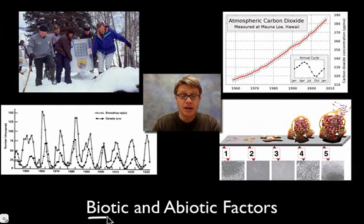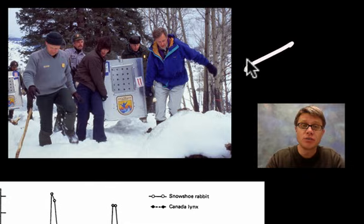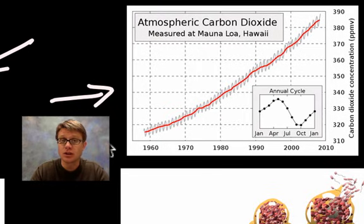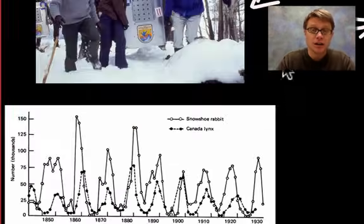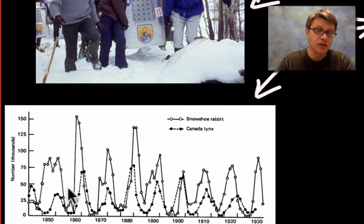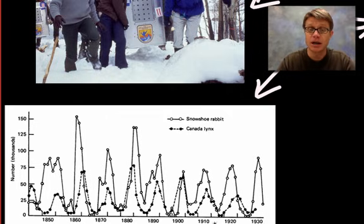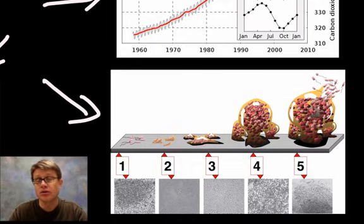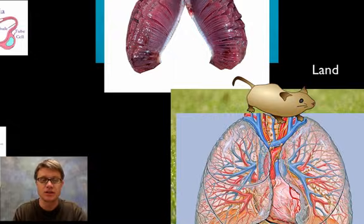Biotic factors are living factors, and abiotic factors are non-living. For example, reintroducing the wolf into Yellowstone Park is a biotic factor. Increasing CO2 levels leading to global warming is an abiotic factor. The snowshoe hare population affecting the lynx population is responding to biotic factors. When bacteria create a biofilm on an abiotic surface with water flowing over it, they're responding to abiotic factors in order to maintain homeostasis.